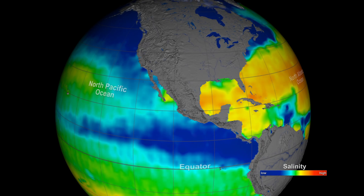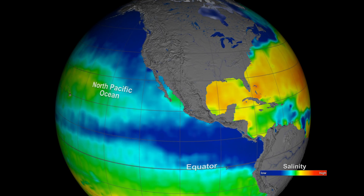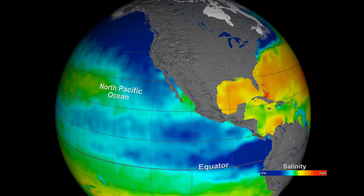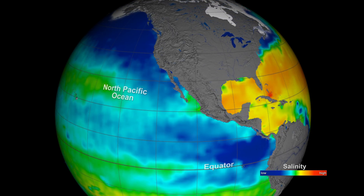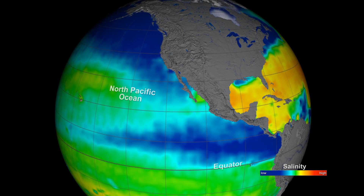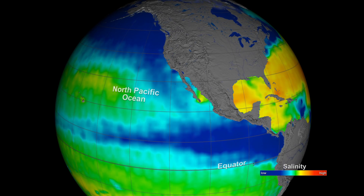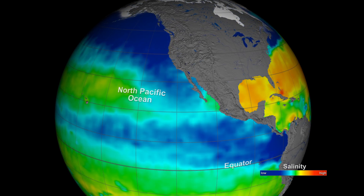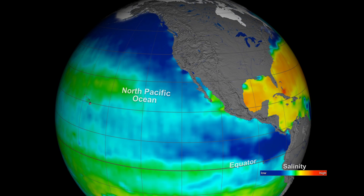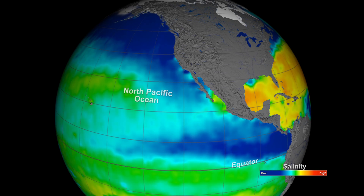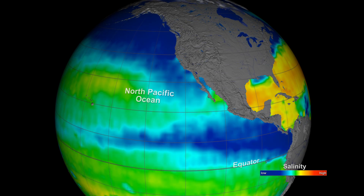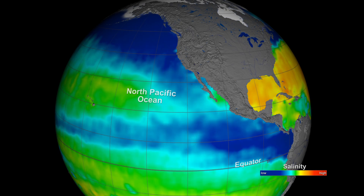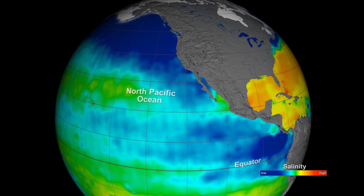Conditions are different in the North Pacific Ocean. Near the equator, in one of the wettest regions on the planet, heavy rainfall adds an abundance of water to the sea surface. This results in the dark blue band of low salinity water off the coast of South America and Central America.